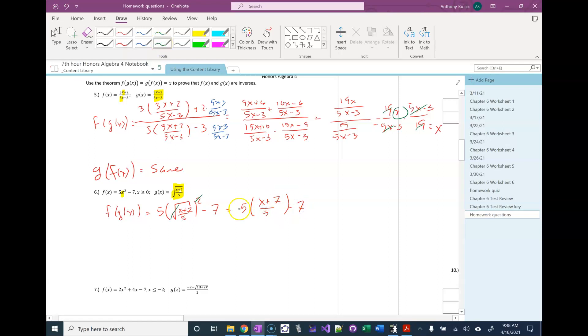And the times 5 is going to cancel the divides by 5. And the plus 7 cancels the minus 7. And you're done.